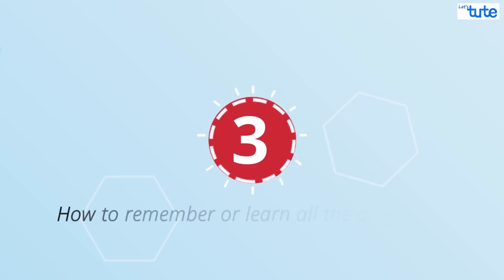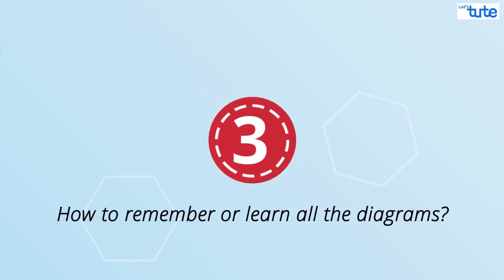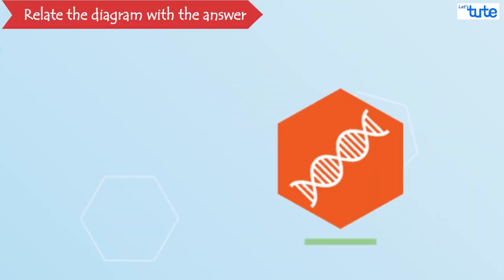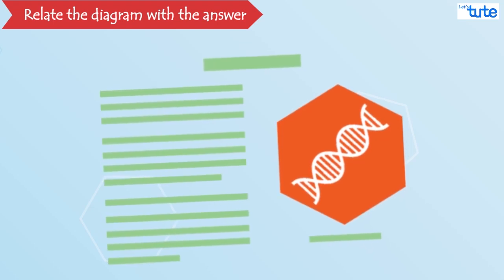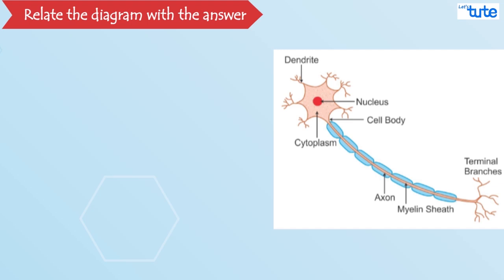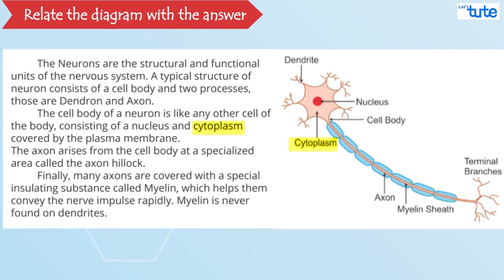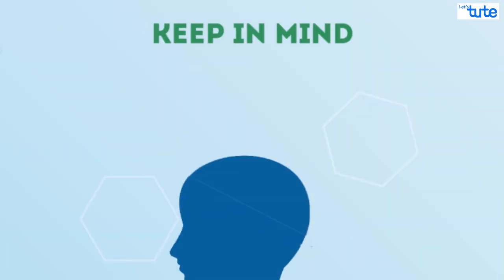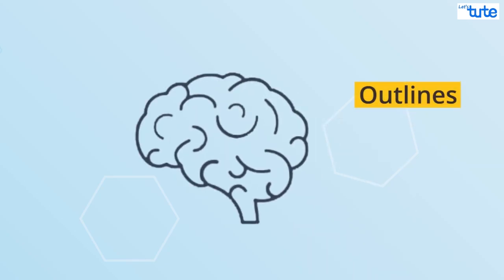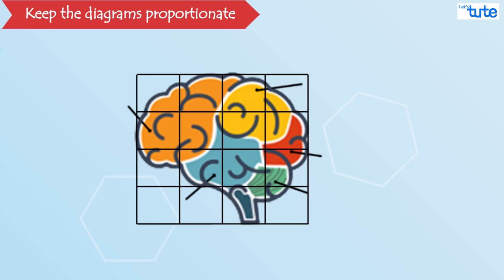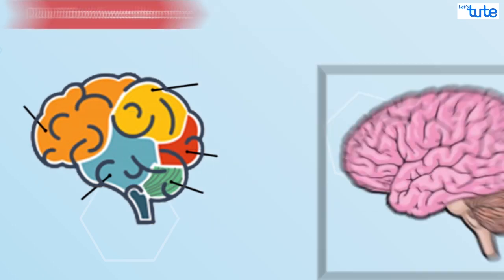The next question asked is how to remember or learn all the diagrams? The basic reply that you will get on this is practice. Relate the diagram with the answer, so you need not take extra efforts to remember the parts. For example, if we take structure of a neuron, if we study the answer, then remembering the parts will be easy. You just have to practice it once. Few things to be kept in mind are, first draw the outline and then the inner parts. Make the diagram proportionate, keep it simple and don't over decorate it.